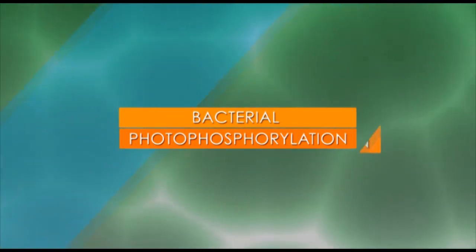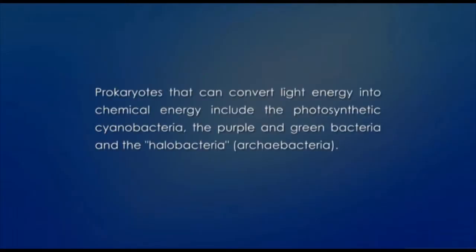Hello students. The topic of today's module is bacterial photophosphorylation. Photosynthesis is a conversion of light energy into chemical energy that can be used in the formation of cellular material from carbon dioxide. Over half of the photosynthesis on Earth is carried out by microorganisms. Prokaryotes that can convert light energy include photosynthetic cyanobacteria, purple and green bacteria, and halobacteria or archibacteria. The evolutionary roots of photophosphorylation probably lie in the anaerobic world between 3 billion and 1.5 billion years ago, and probably evolved shortly after electron transport chains and anaerobic respiration began to provide metabolic diversity.